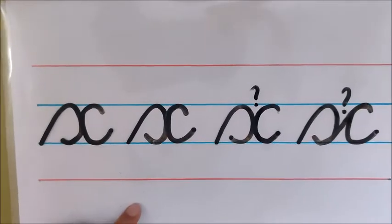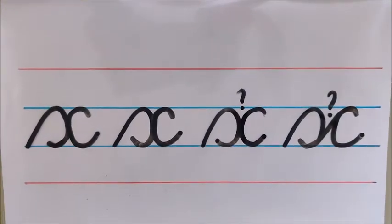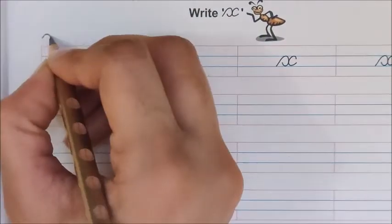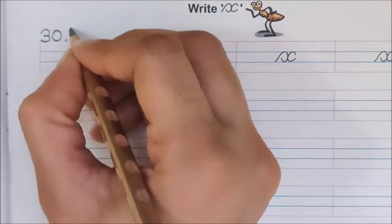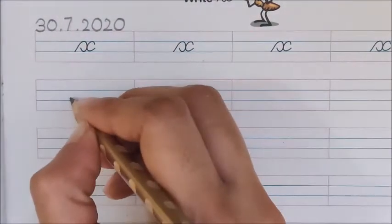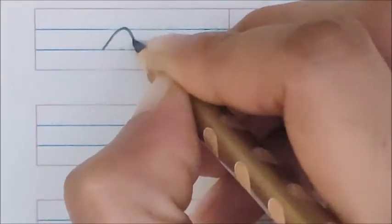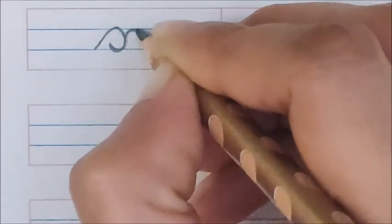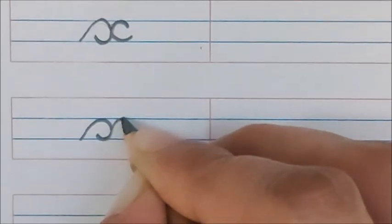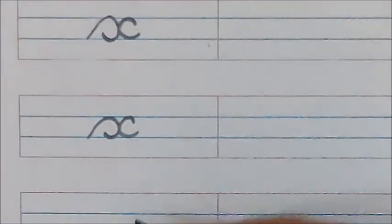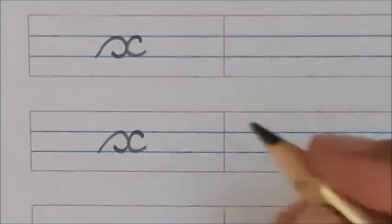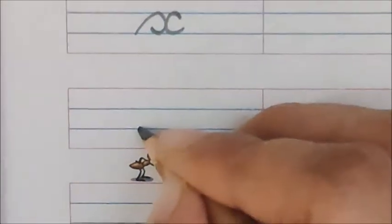So let us write letter X in our book. Children, on the red line let us write the date first. Today is July 30 — 30.7.2020. Now let us write letter X here. Go up, touch the blue line, come down, come back on the same line, up and then make a C. X, X. Go up, down, come back, again go down. X, X. Go up, down, come back on the same line, then make C — and this is your X. Children, say and write: X, X.